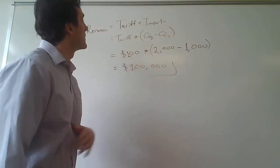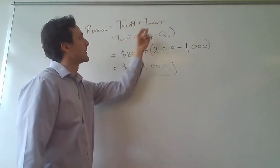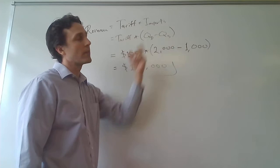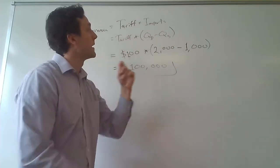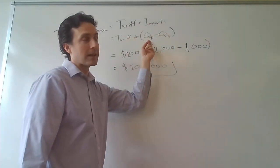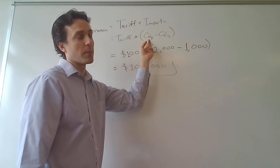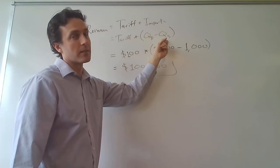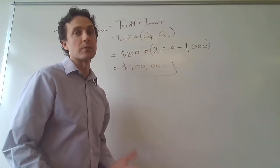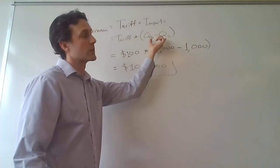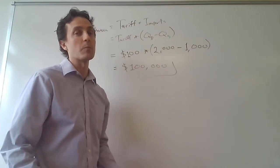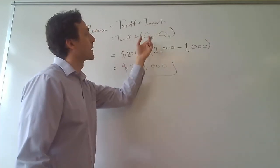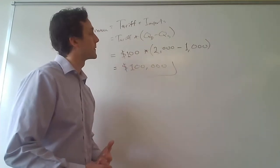So that means the tariff times the amount that's being brought in—we can calculate that as the quantity demanded domestically (how much people want to buy) minus the quantity supplied domestically (how much domestic suppliers are supplying). The difference between those two is the amount of imports. So tariff times quantity demanded minus quantity supplied.